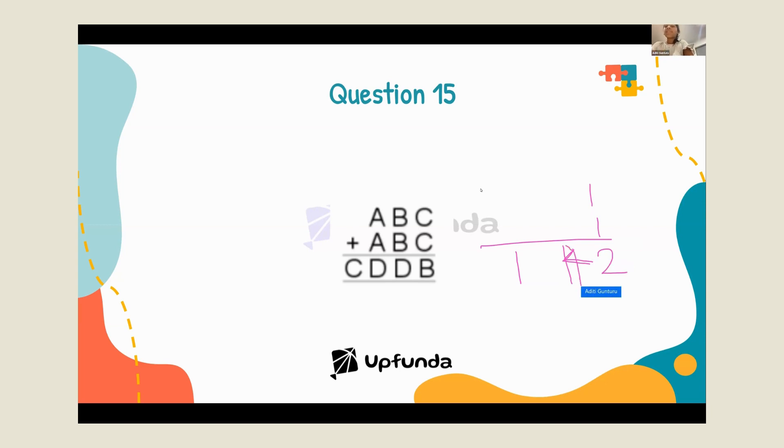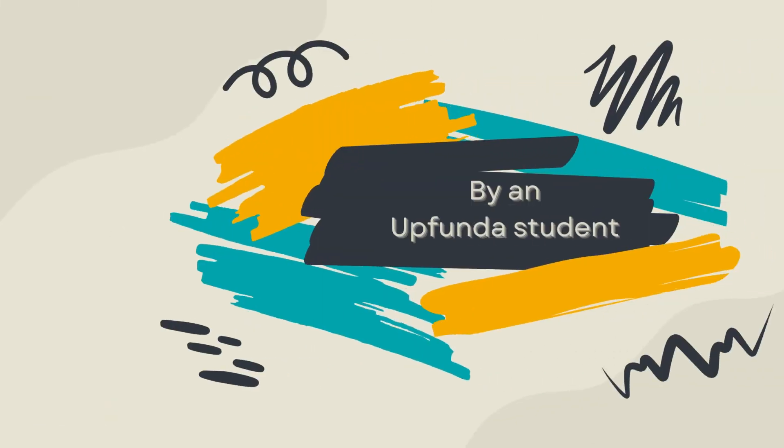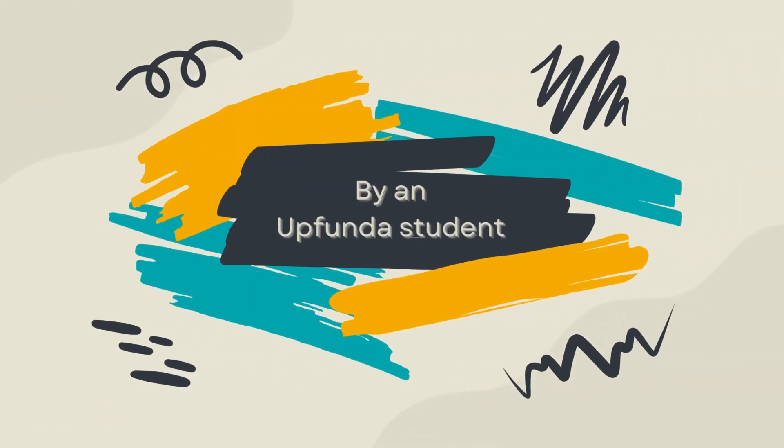Now we have to find the A digit in such a way that it will equal to 14. Now 7 plus 7 equals to 14, so it will be here, 7 plus 7 is 14, and that is our answer.